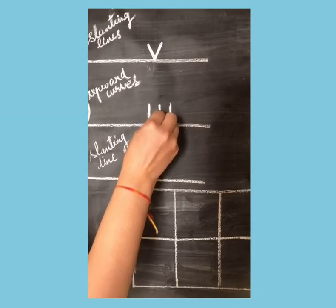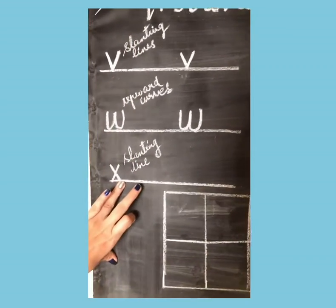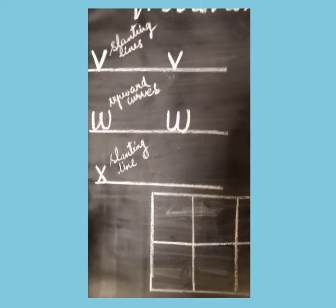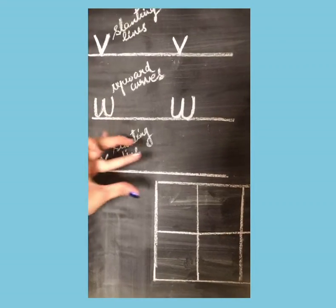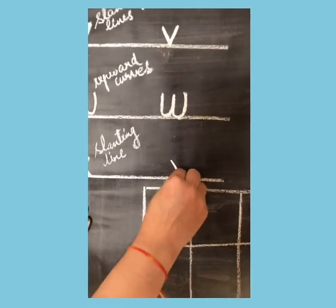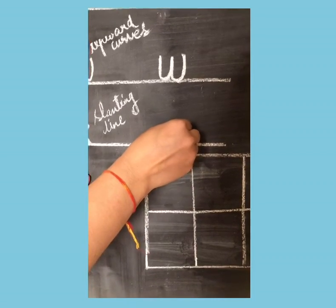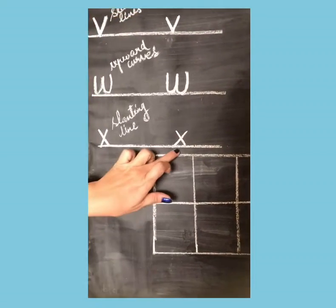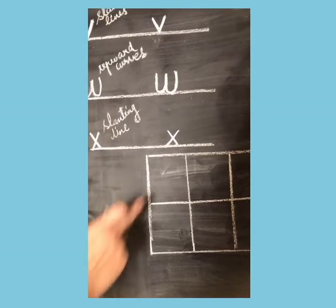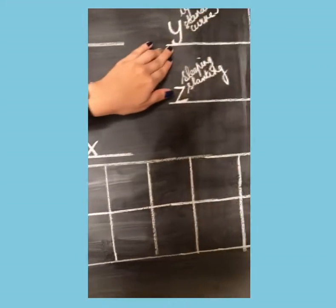To write small X, you need two slanting lines — it's the same way of writing your big X but smaller. Make a slanting line like this, and then make another slanting line crossing it, like a cross. This is your small X.